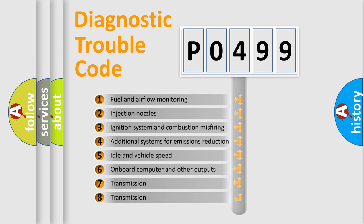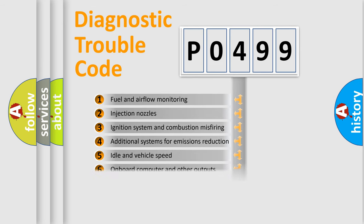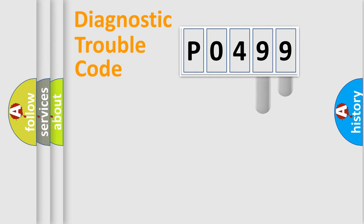The third character specifies a subset of errors. The distribution shown is valid only for the standardized DTC code.